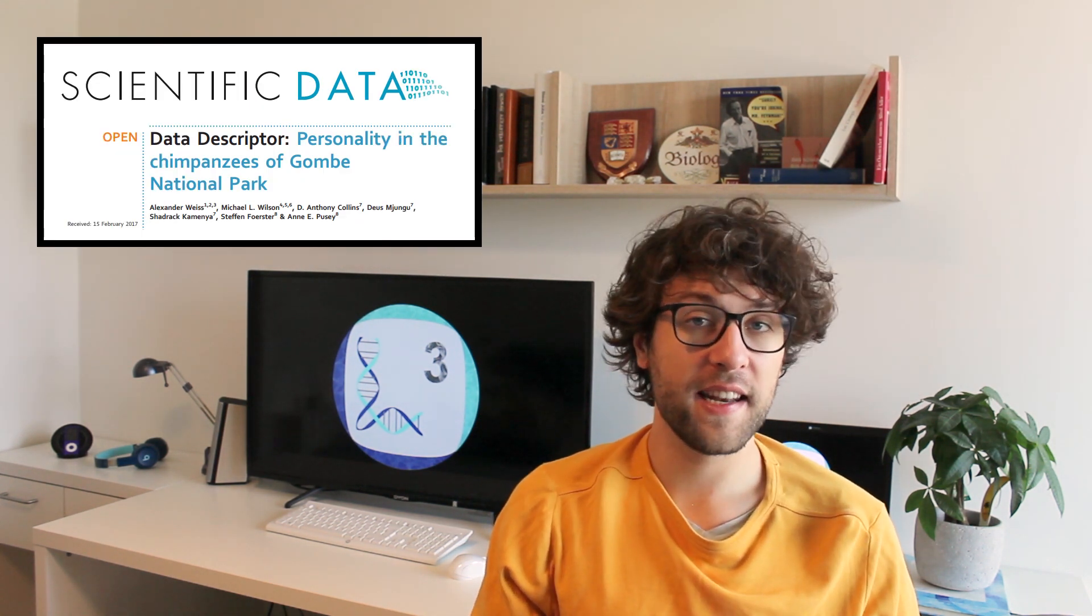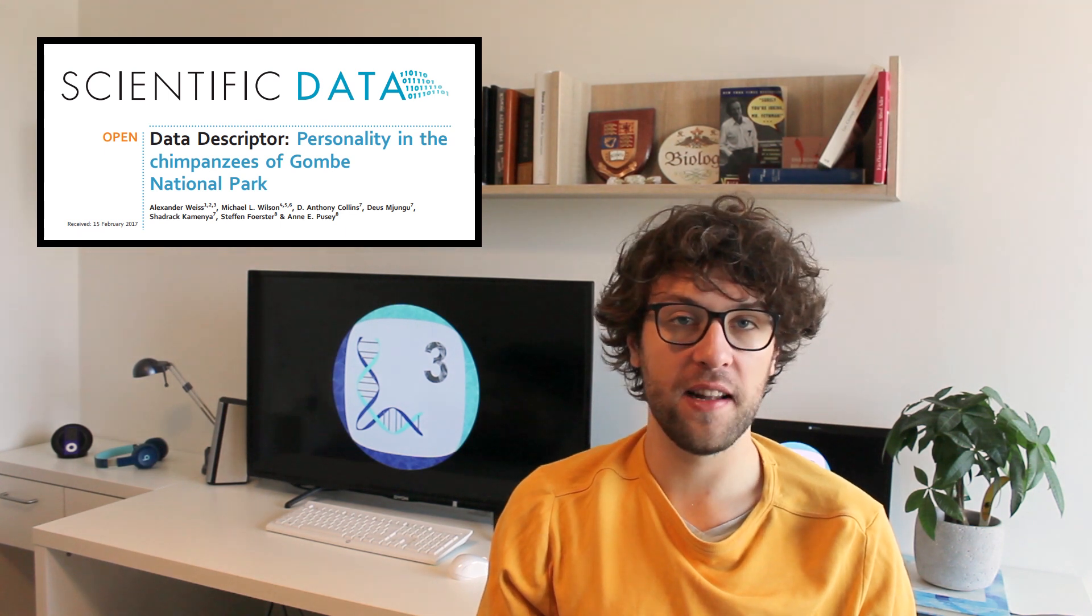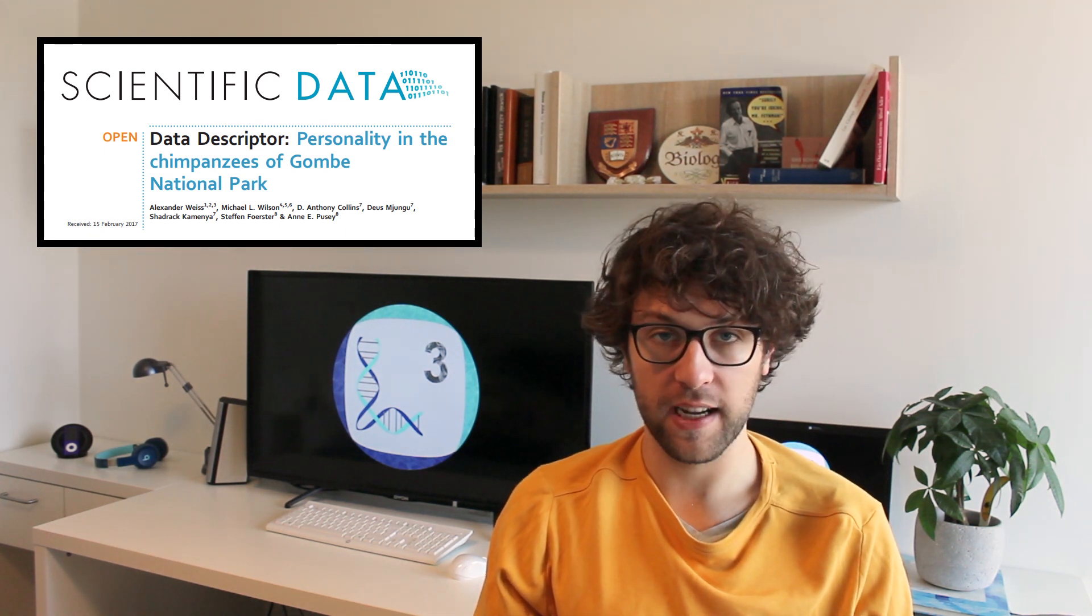One young chimpanzee called Flint was weaned early at four and a half years old. He went through a period of depression during which he did not groom with his mother, had wild tantrums and hit the ground. With her vivid depictions Jane Goodall drew a global audience. Her descriptions of chimpanzee personalities were widely read and are still relevant today.